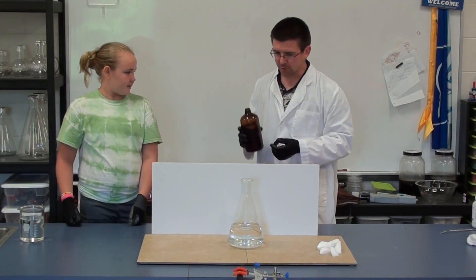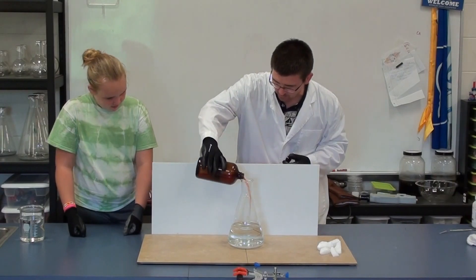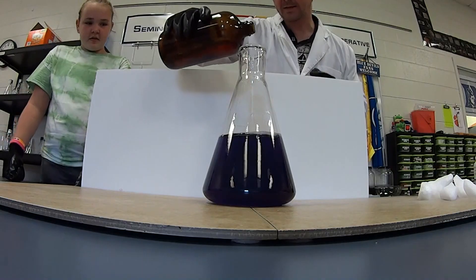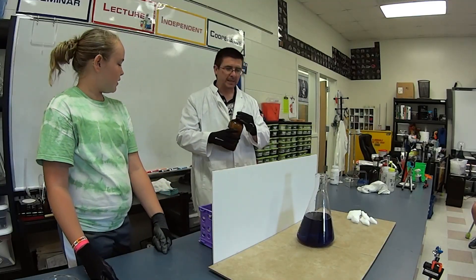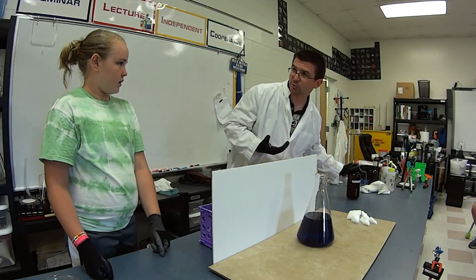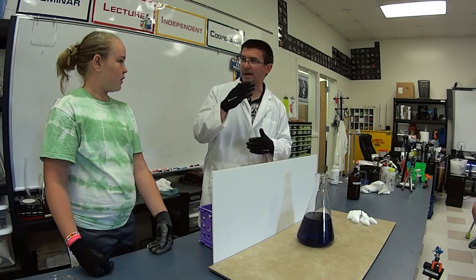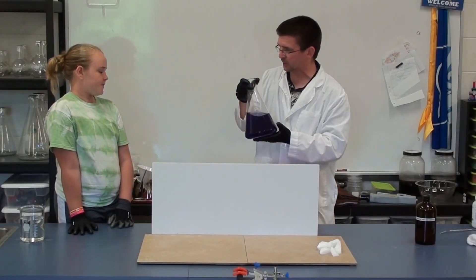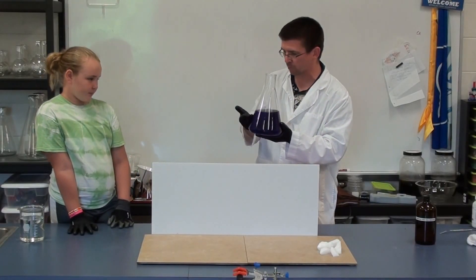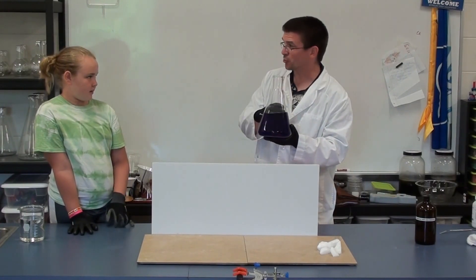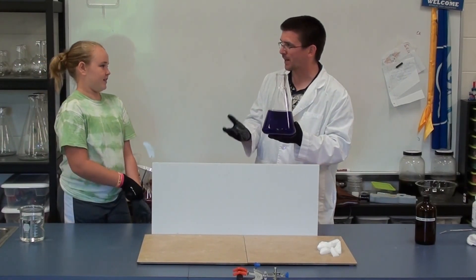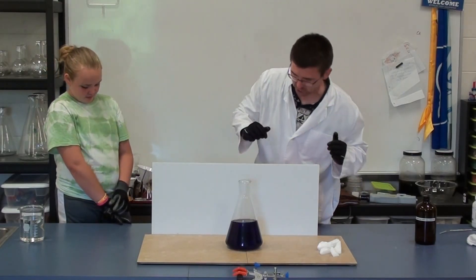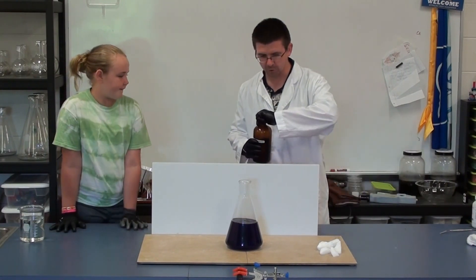I've got some universal indicator here, and I'm going to pour that into this flask that has sodium hydroxide solution in it. Sodium hydroxide is a very strong base with a very high pH. Our universal indicator tells us the pH of a liquid — purple is a base, green is neutral, red is a strong acid, and yellow is a weaker acid. We're going to make a color change reaction using dry ice and universal indicator.